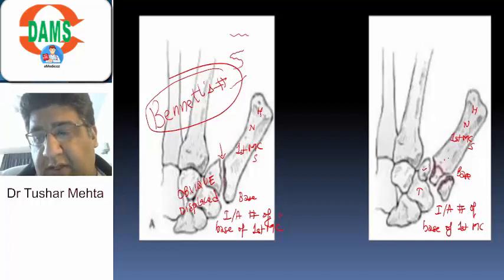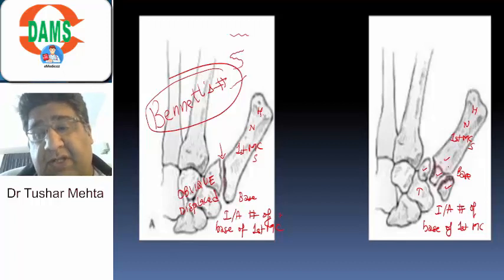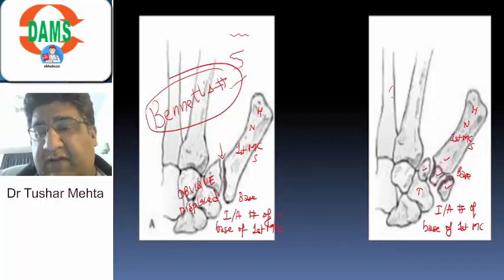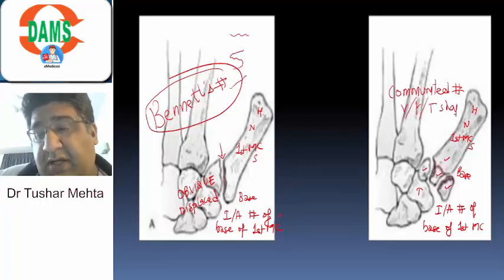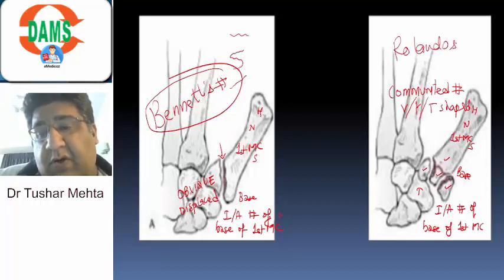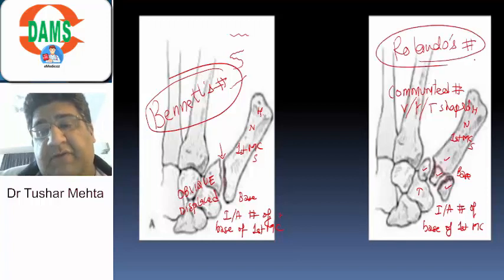One, two, three, probably even four fragments. With this smaller and smaller size of fragments, I will definitely call it a comminuted fracture. Apart from that, I can see a V shape. Sometimes you can see a Y shape. Sometimes you can see a T shape. So, this fracture is what is called as Rolando's fracture.